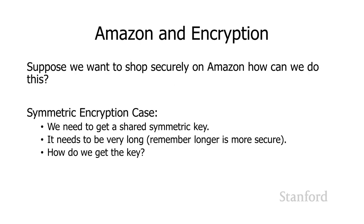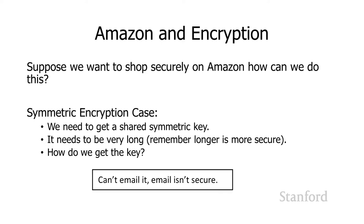One of the problems with symmetric encryption is how somebody gets a key. Suppose I am communicating with Amazon and I want to communicate securely — providing them with my credit card information. With symmetric encryption, we need a shared key that we both use for encrypting and decrypting, and it needs to be very long because longer is more secure. How do I get the key from Amazon? They could email it to me, but email is not secure. I can't think of a good way for Amazon to get that key to me other than through snail mail.